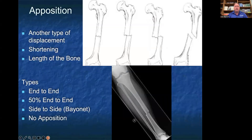Apposition is another type of displacement, but instead of talking about where angulation was bending, now we're talking about the two ends of the bones and shortening that affects the length of the bone. The image on the far left has end-to-end apposition. The second picture has 50% apposition. The third picture shows bayonet or side-to-side apposition where the two pieces are touching but there's 0% overlap. The last picture is no apposition. In the bottom X-ray, you can see what we would call a minimally displaced or less than 50% end-to-end apposition of this mid-shaft fracture of the tibia.